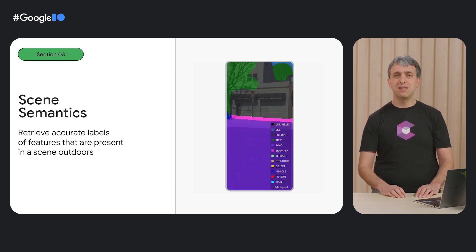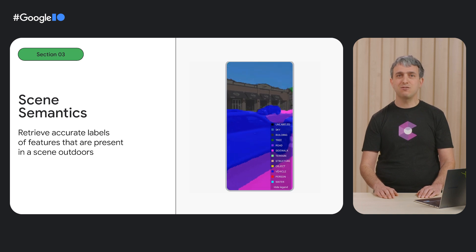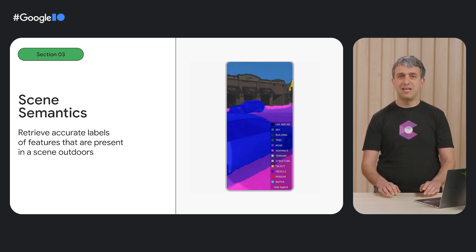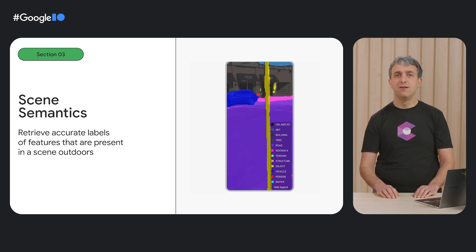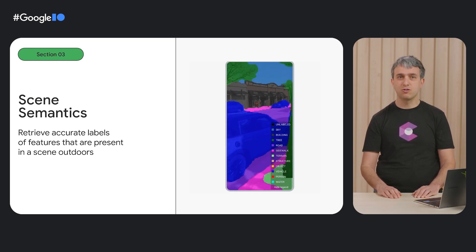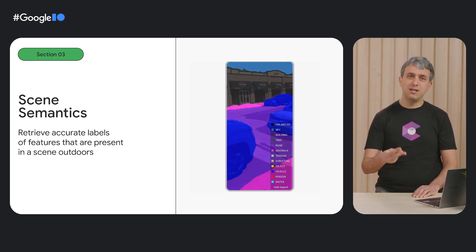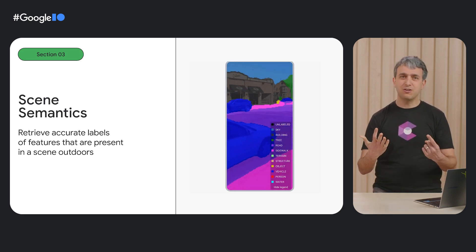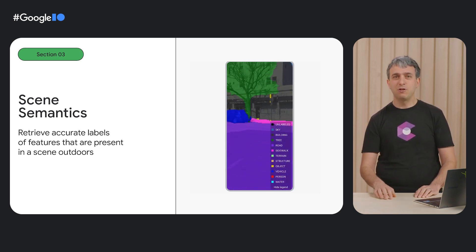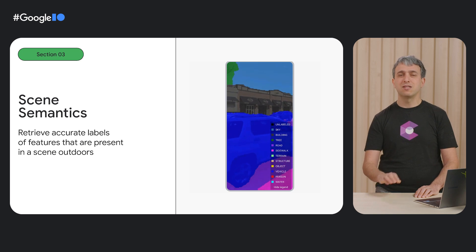Our third area of investment is world understanding. The ability to automatically place virtual objects based on semantic understanding of the world can save developers a significant amount of time and effort. Today, we are launching the Scene Semantics API. This API uses AI to provide accurate labels of features that are present in a scene outdoors. Twelve class labels are available at launch — for instance, sky, building, tree, road, sidewalk, vehicle, person, and more. So if you are building an AR walking navigation experience and want to always place AR direction arrows on the sidewalk, you can do just that using the Scene Semantics API.